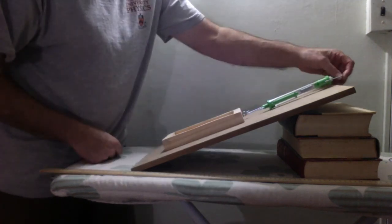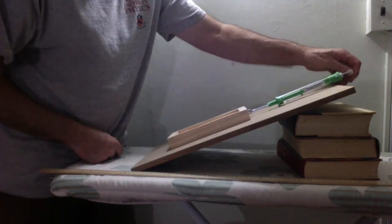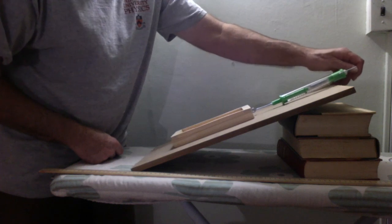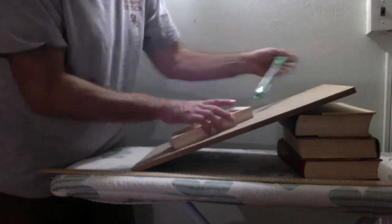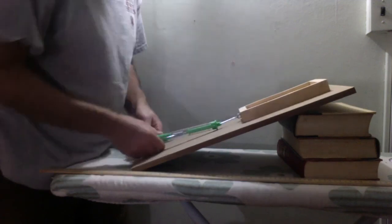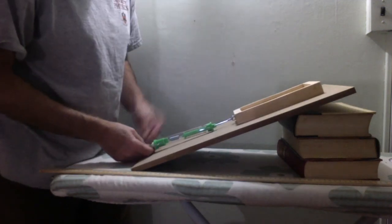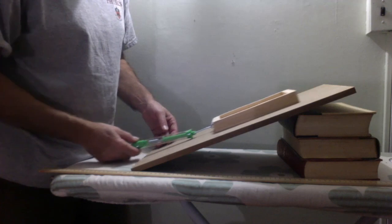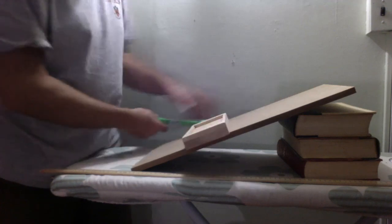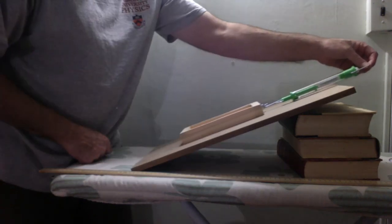Then you can get your spring scale and see if you're right. How hard would you have to pull to get it started up the plane? You can turn it around and see how hard you would have to pull to get it to start down the plane. You can see how hard it takes to move it at a constant velocity, down and up the plane.